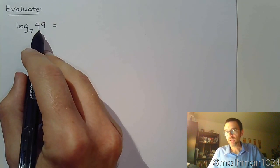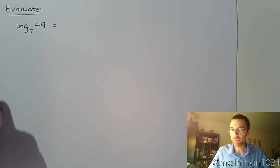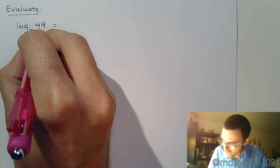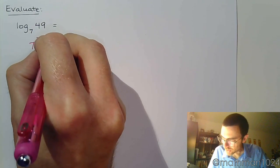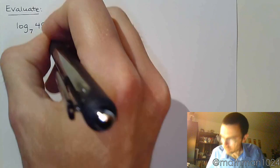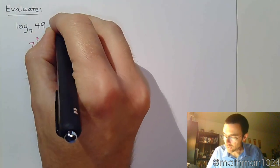So remember, the answer to the log is the power. So what we're supposed to be thinking about is this: 7 raised to some number is supposed to equal 49. The answer to the log is the power. So here, what power of 7 gives you 49? 2. And that's it.